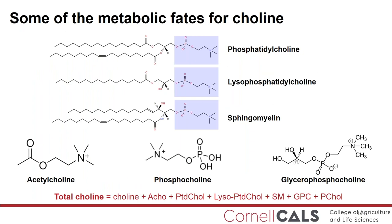In addition to phosphatidylcholine, choline can be found in other types of metabolites, including lysophosphatidylcholine. This lipid is generally recognized as being formed in the intestine in response to choline feeding, and it is also a key component of membranes and an emulsifier found in bile. Phosphatidylcholine and lysophosphatidylcholine are types of lecithin and lysolecithin, which are common feed ingredients. Other types of metabolites involved in choline metabolism include sphingomyelin, acetylcholine, phosphocholine, and glycerophosphocholine. In papers, total choline is often calculated as the sum of all these metabolites.